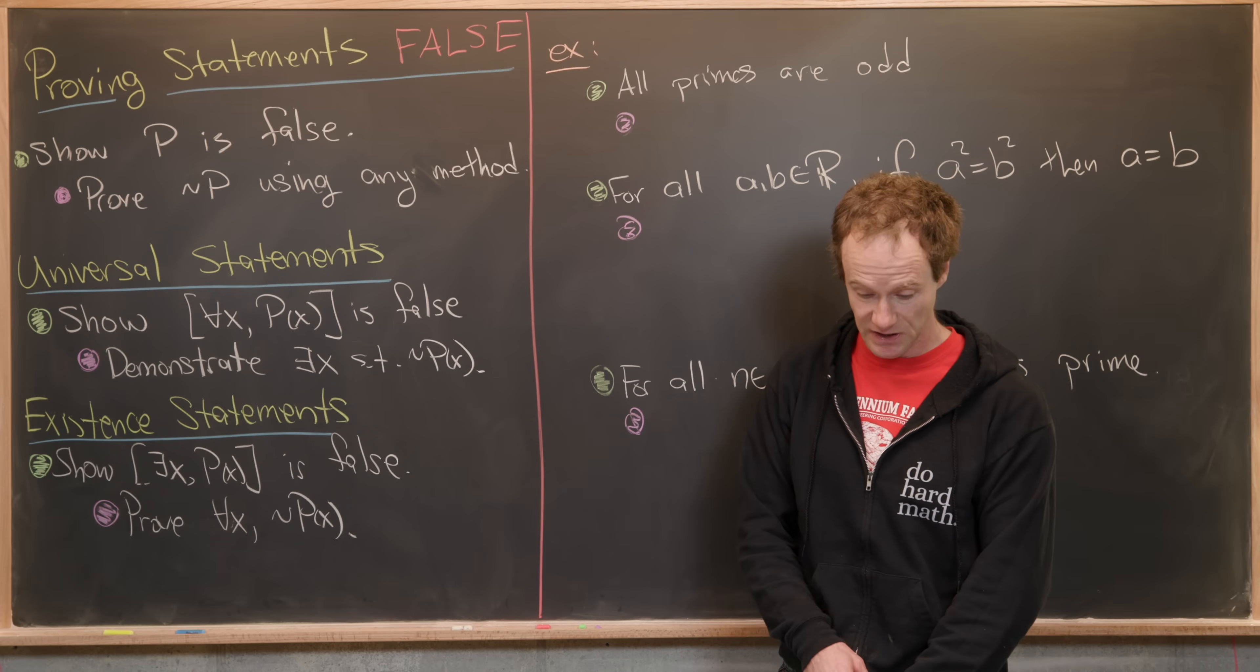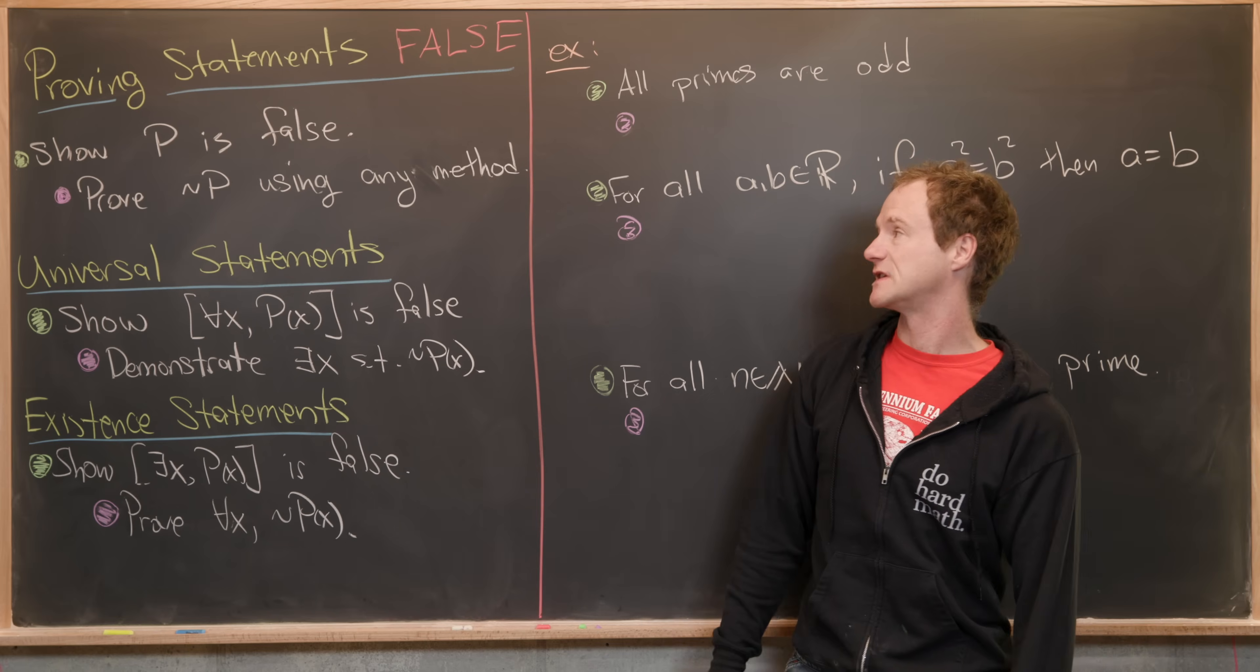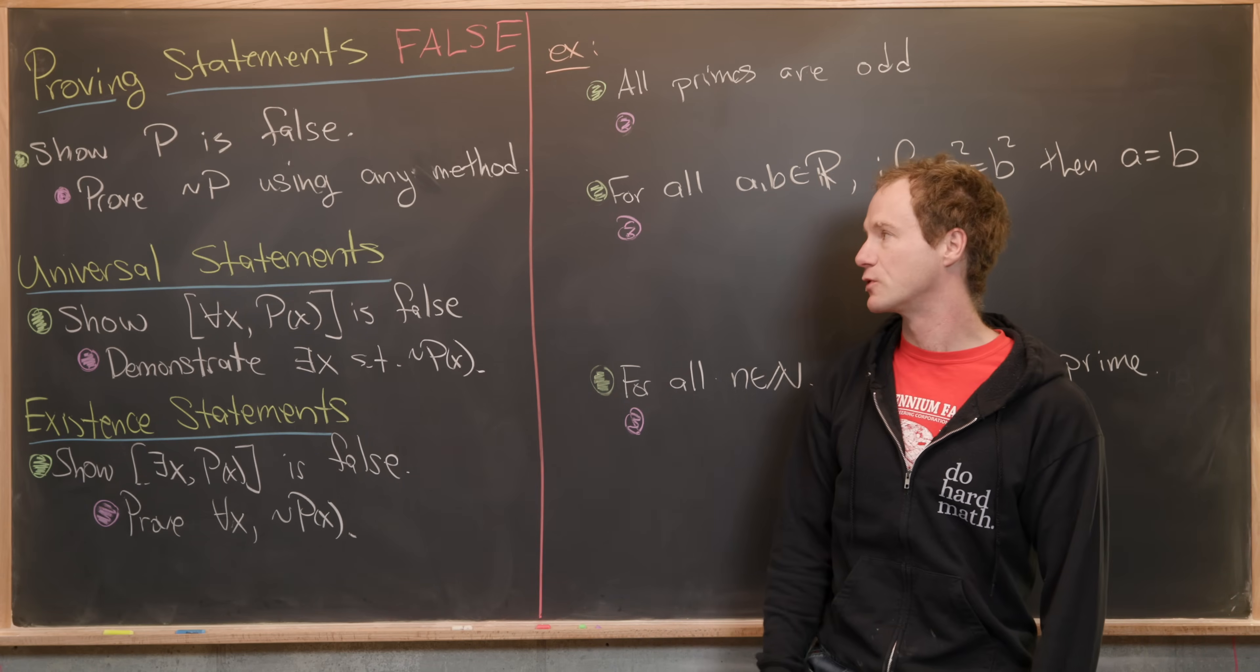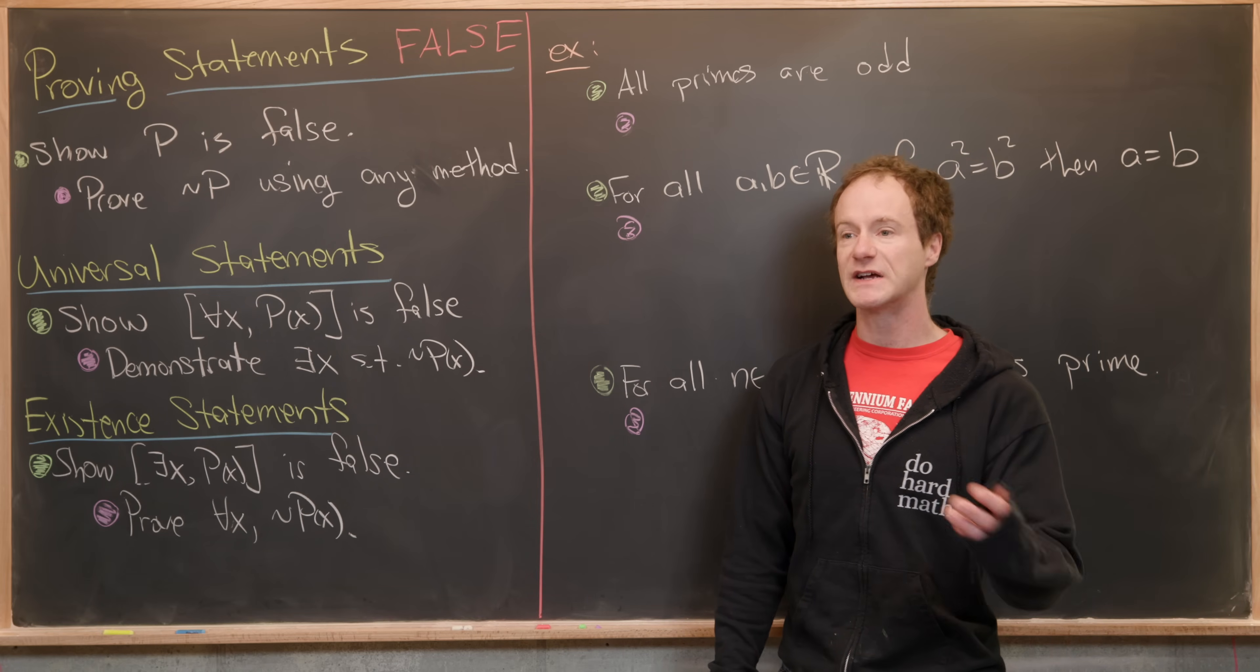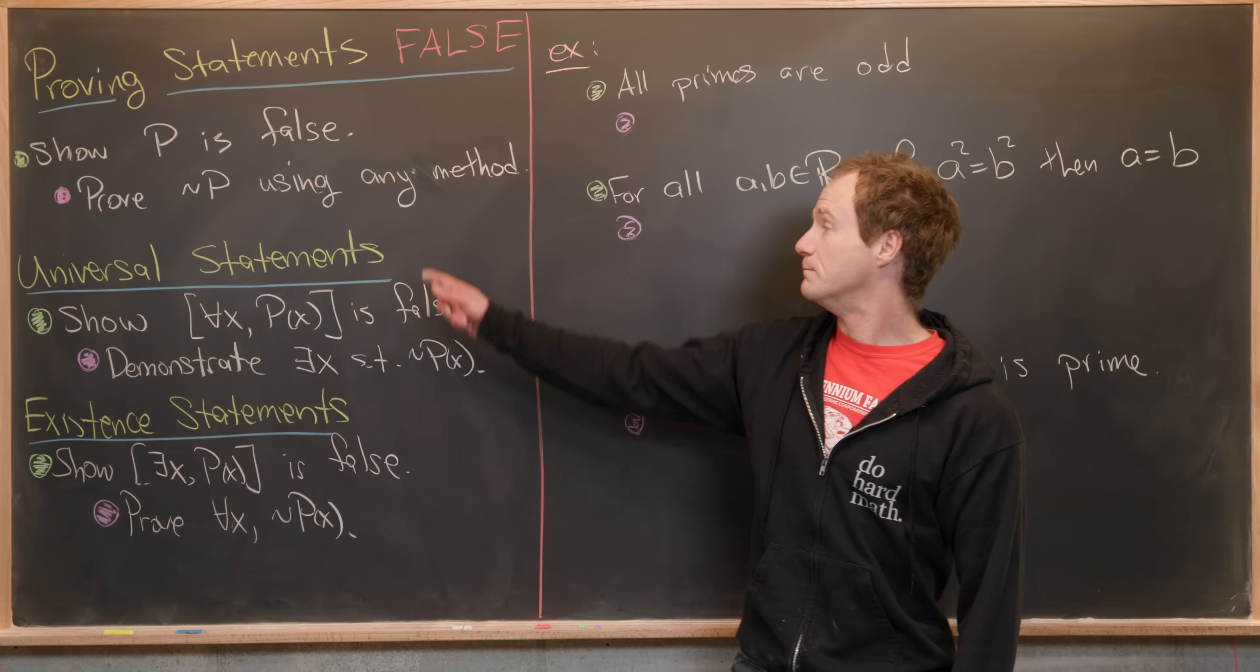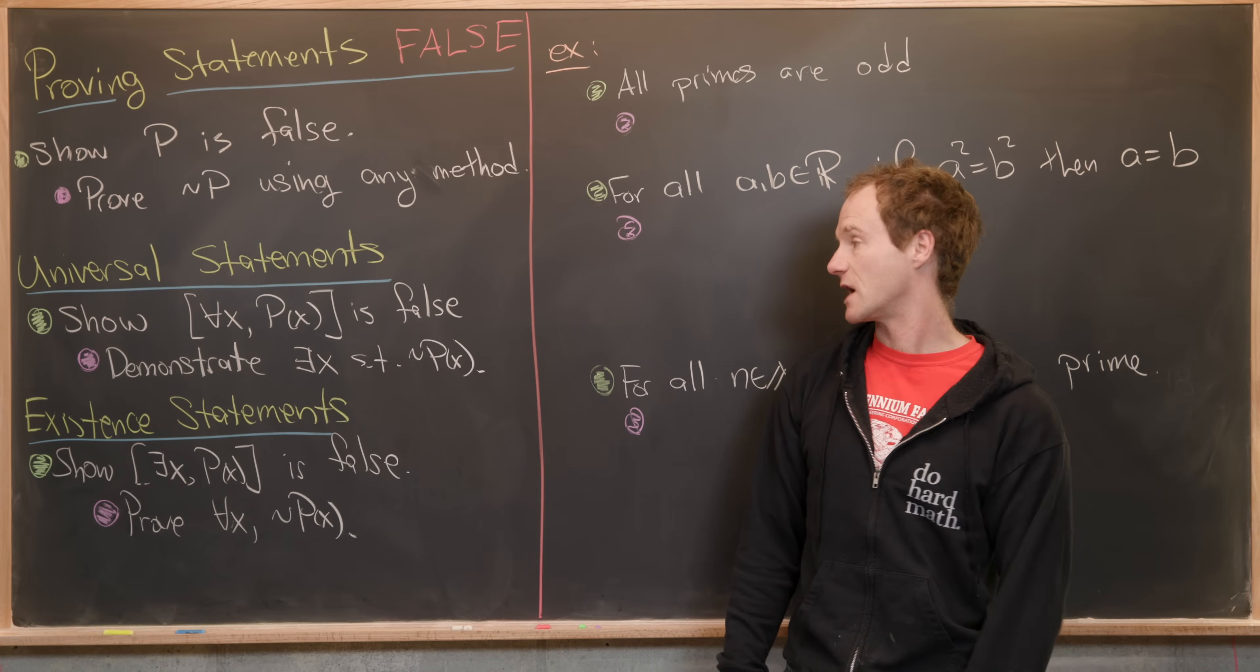Here we want to specifically talk about proving that statements are false, sometimes called disproof. If our goal is to show that a mathematical statement P is false, then we can just apply things we've looked at before to the statement not P. In other words, we want to prove not P using any method. We can almost stop the video right here because we know how to negate statements from a previous video. But there are some special examples of disproof, mainly universal statements and existential statements that are sometimes a little bit tricky to negate.